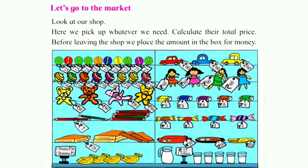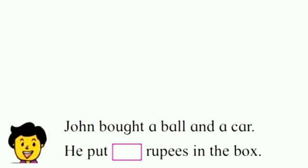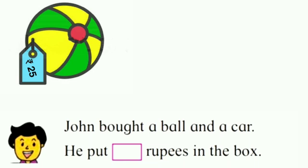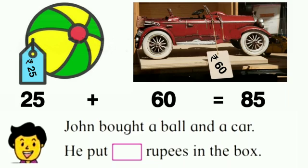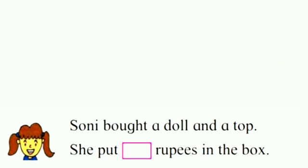Let us now go to the market, pick whatever we need from the shop, and calculate the total price to put in the box. John bought a ball and a car. The price of the ball is 25 rupees and the price of the car is 60 rupees. So 25 plus 60 is equal to 85. John will put 85 rupees in the box.